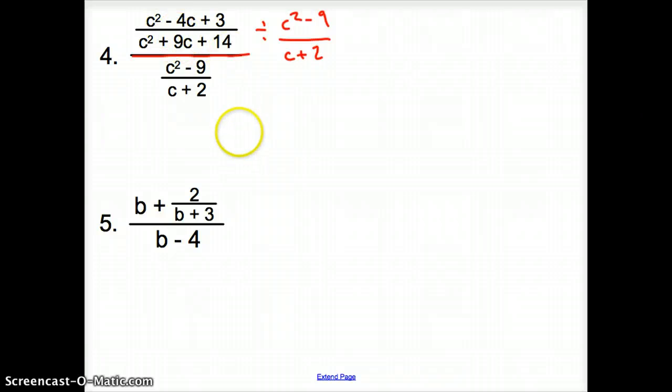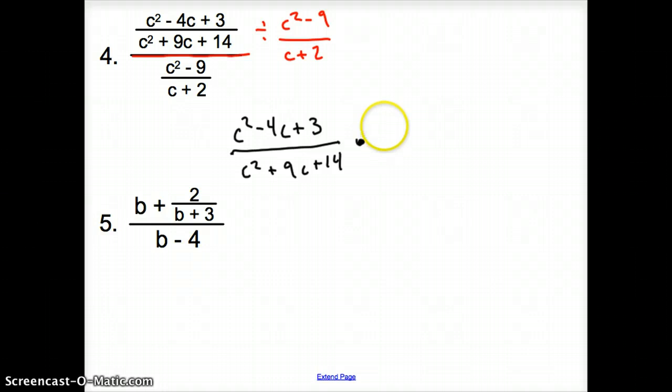So I'm going to bring this guy down right here. We have a c squared minus 4c plus 3. That's going to go over a c squared plus 9c plus 14. We flip and multiply. So we're multiplying now by the reciprocal of this, so it's c plus 2 over c squared minus 9. Now, what can we cancel out, ladies and gentlemen? We can cancel out our c's, so we have to factor.